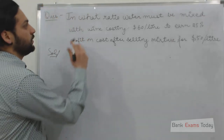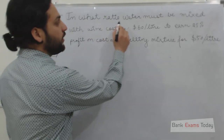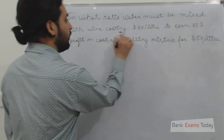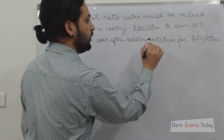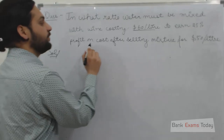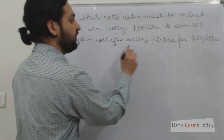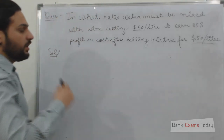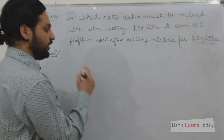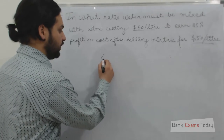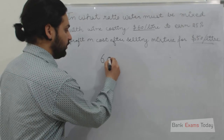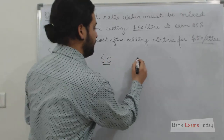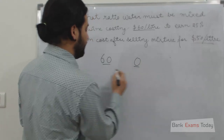Let's take another important example. In what ratio must water be mixed with wine costing 60 dollars a litre to earn a profit of 25% on cost, after selling the mixture for 50 dollars a litre? Here we assume that water is available for free. So let's make the equation table. Here comes wine and here comes water, which is available for free.